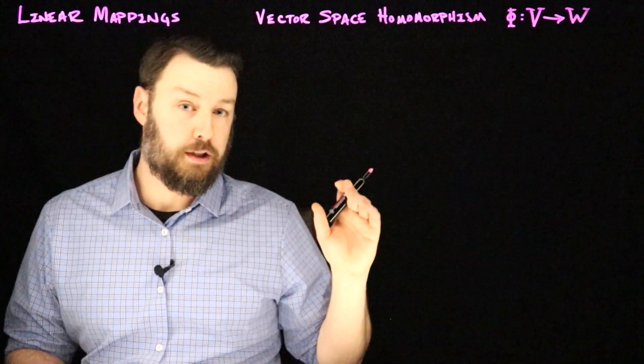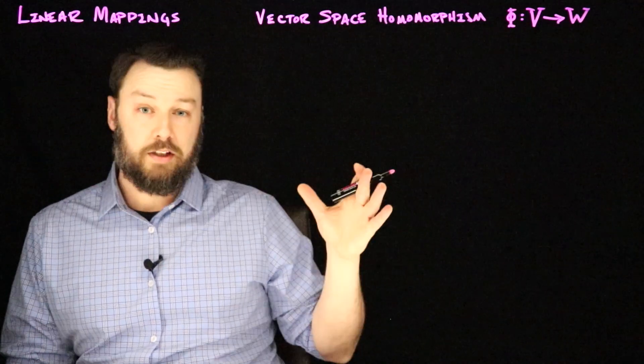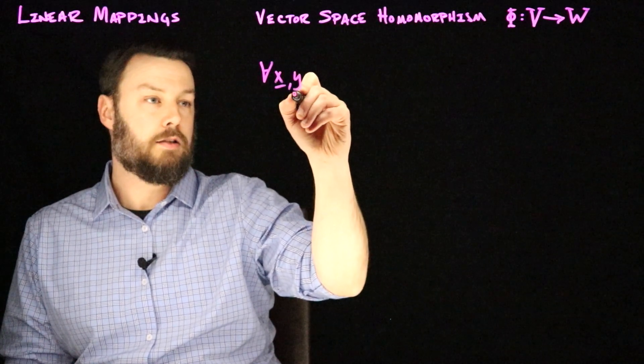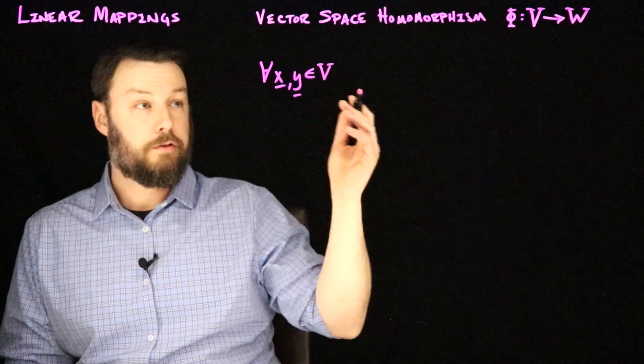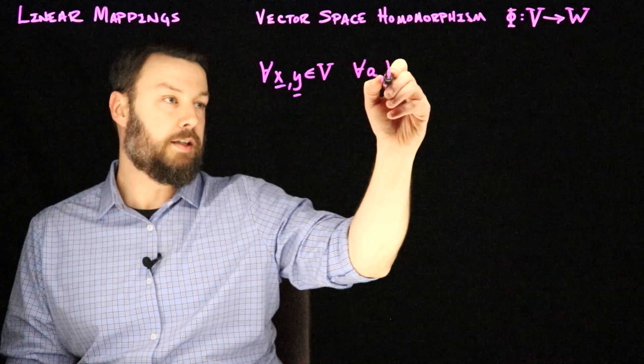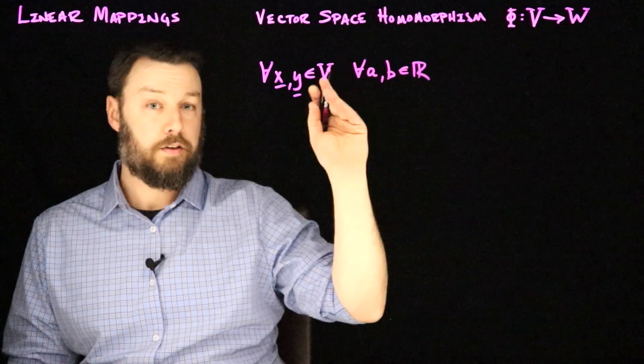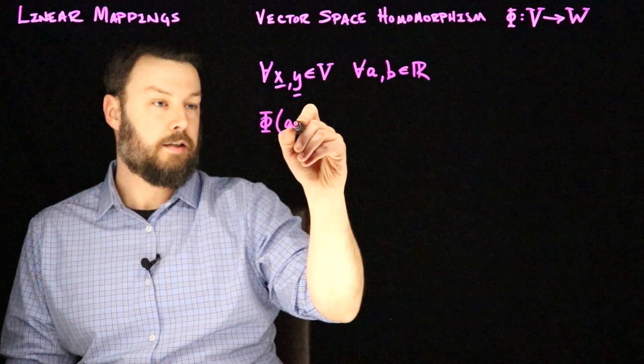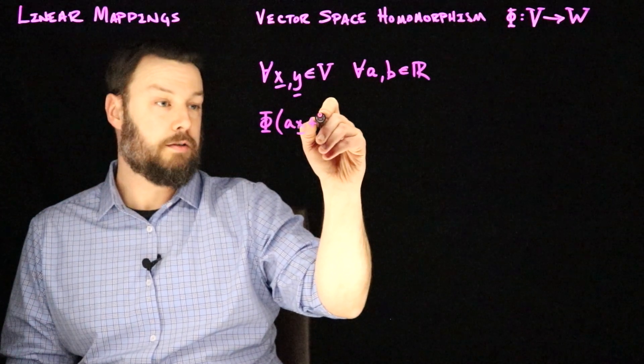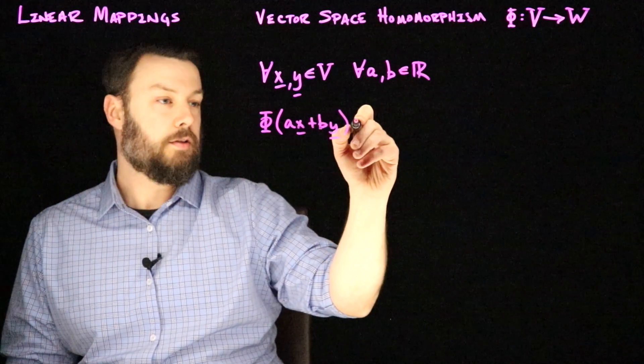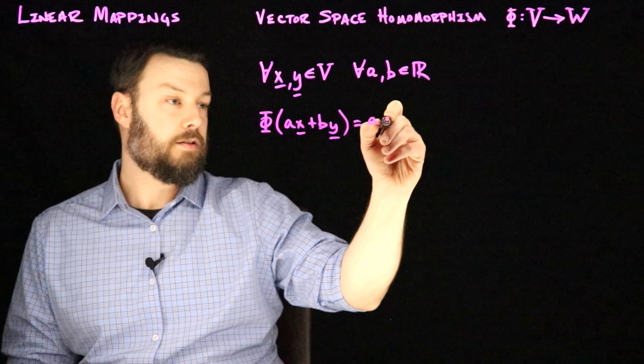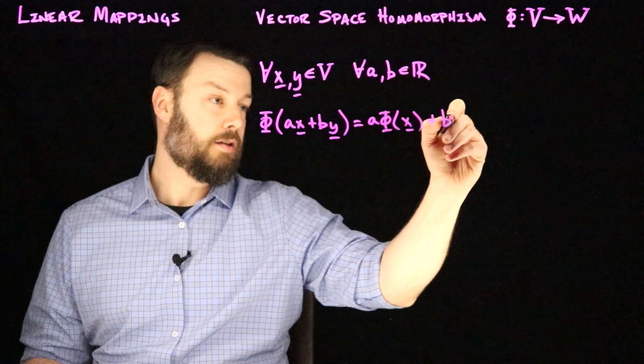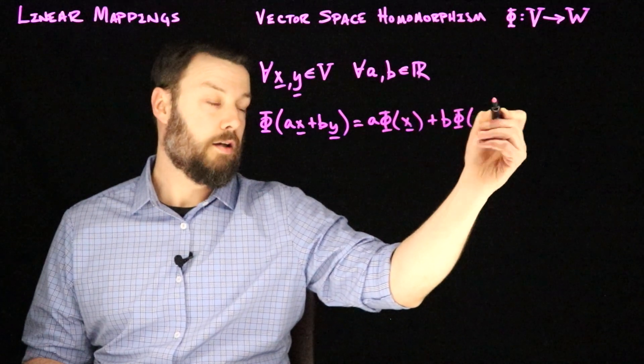So what does it mean for Phi to be a vector space homomorphism? What it means is that it satisfies the condition that for all X and Y in V and for all A and B that are scalar real numbers, that if I apply Phi to AX plus BY, then that is equal to A times Phi applied to X plus B multiplied by Phi applied to Y.